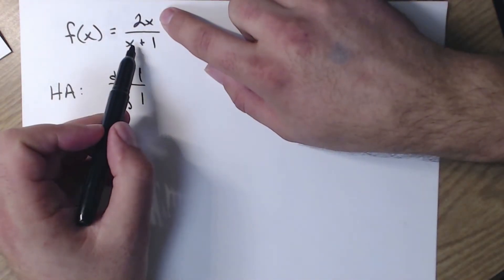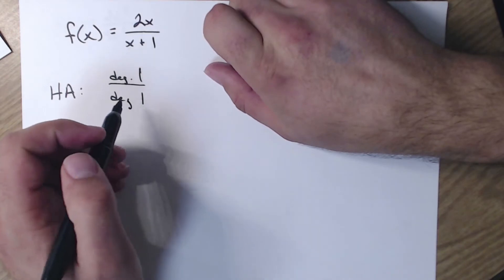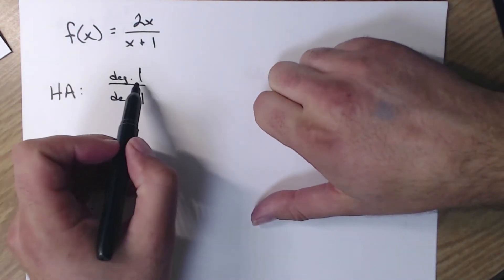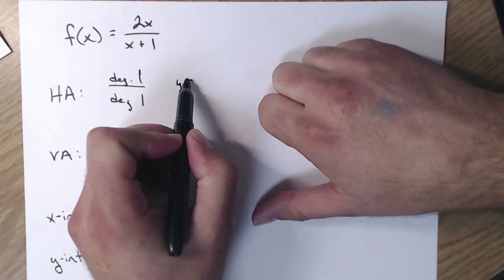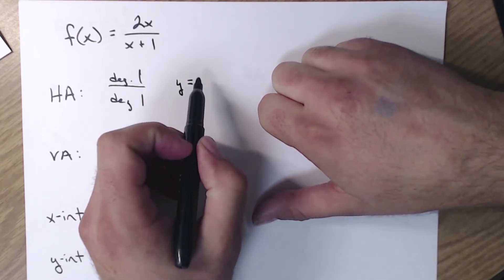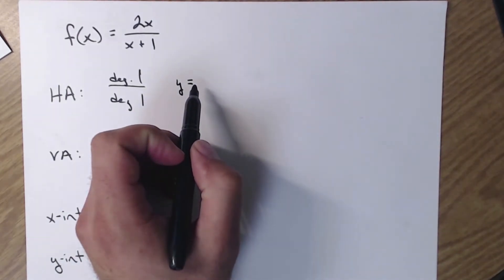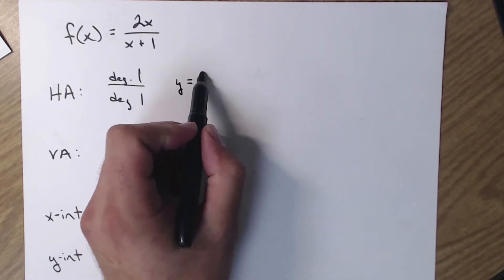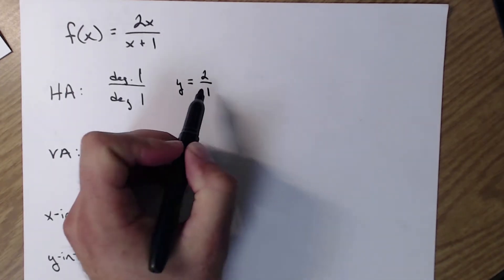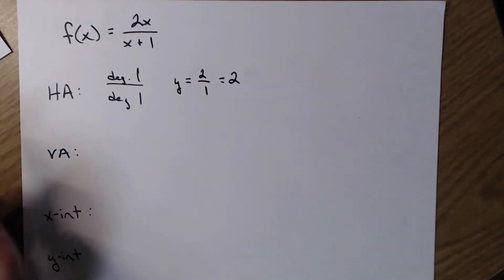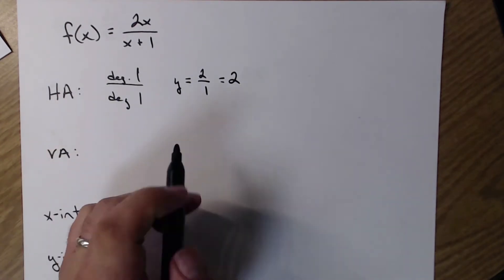So I'm looking at my largest x's on both the top and bottom and seeing what those exponents are. Since they are the same, that means that my horizontal asymptote is going to be y equals and then dividing my leading coefficients. So the leading coefficient on the top is a 2. The leading coefficient on bottom is a 1. So it's just going to be my horizontal asymptote equaling 2.